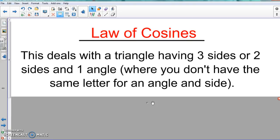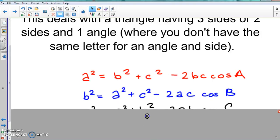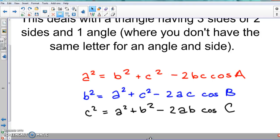So either, again, three sides—they give you just the three sides—or they give you two sides and an angle, and none of the letters match up. So when that happens, we use these here. These are the Law of Cosines. So there are three different ones you can choose from, and it all depends on what they give you.